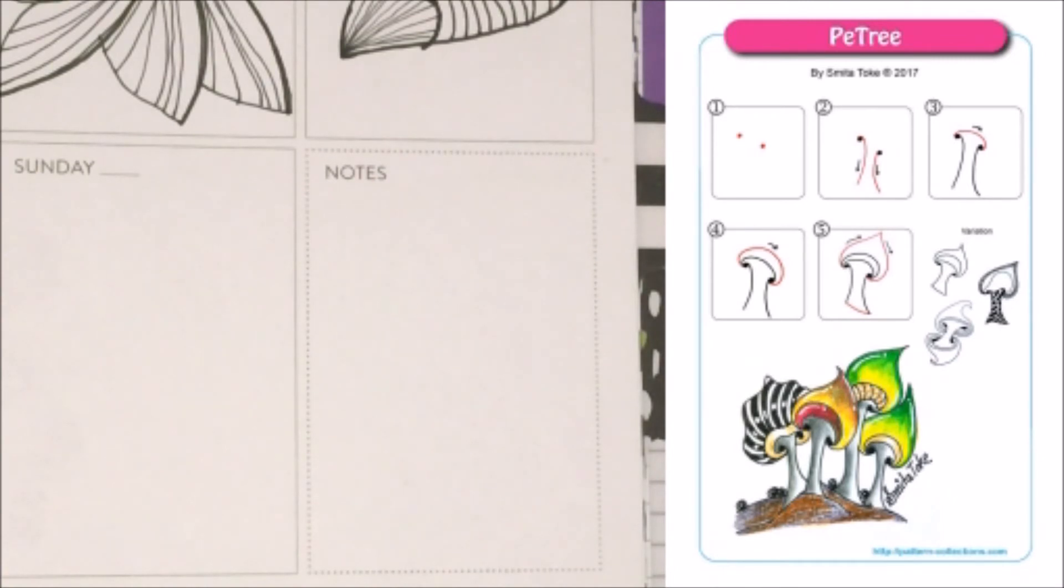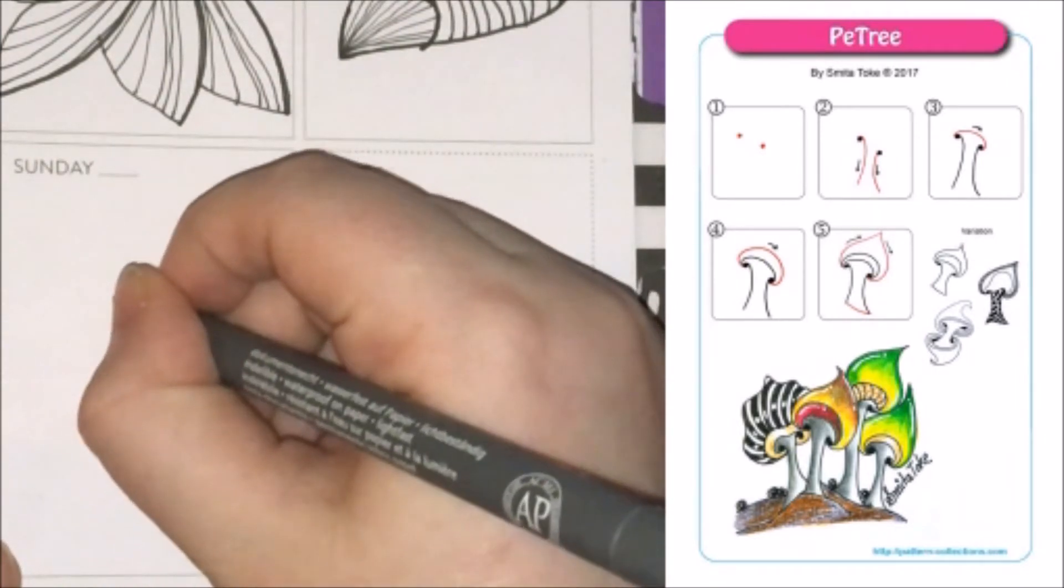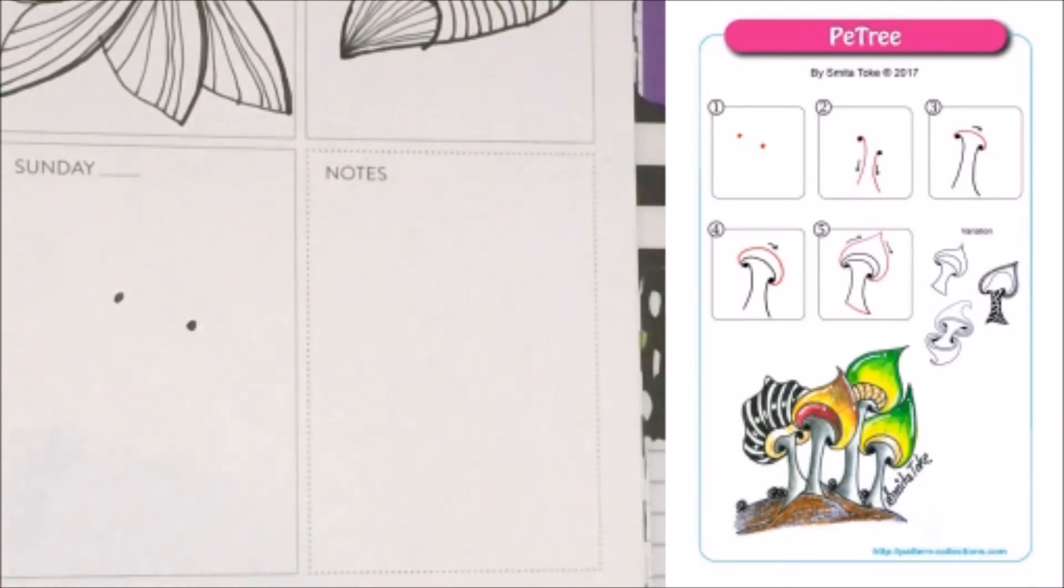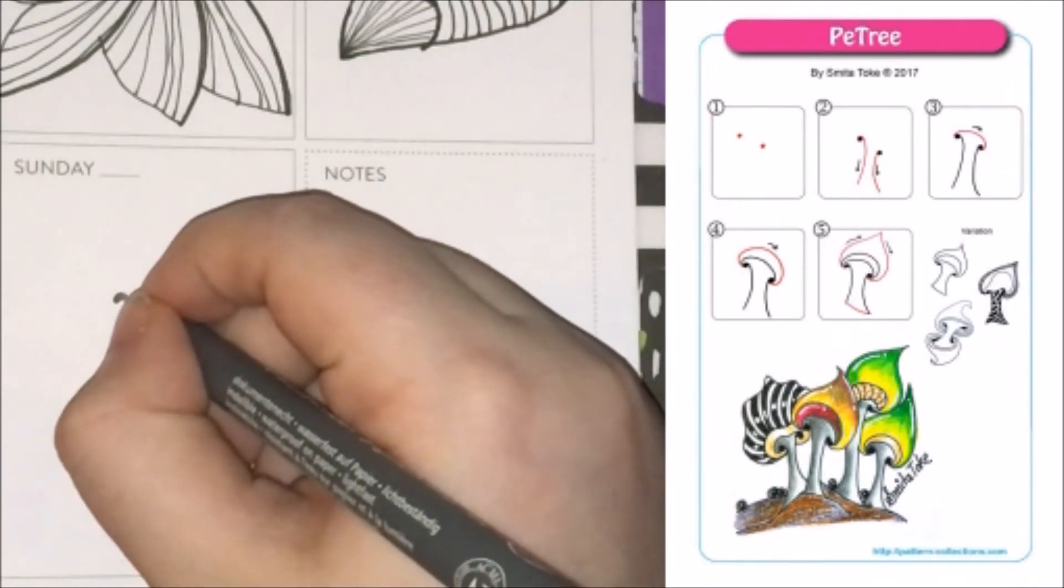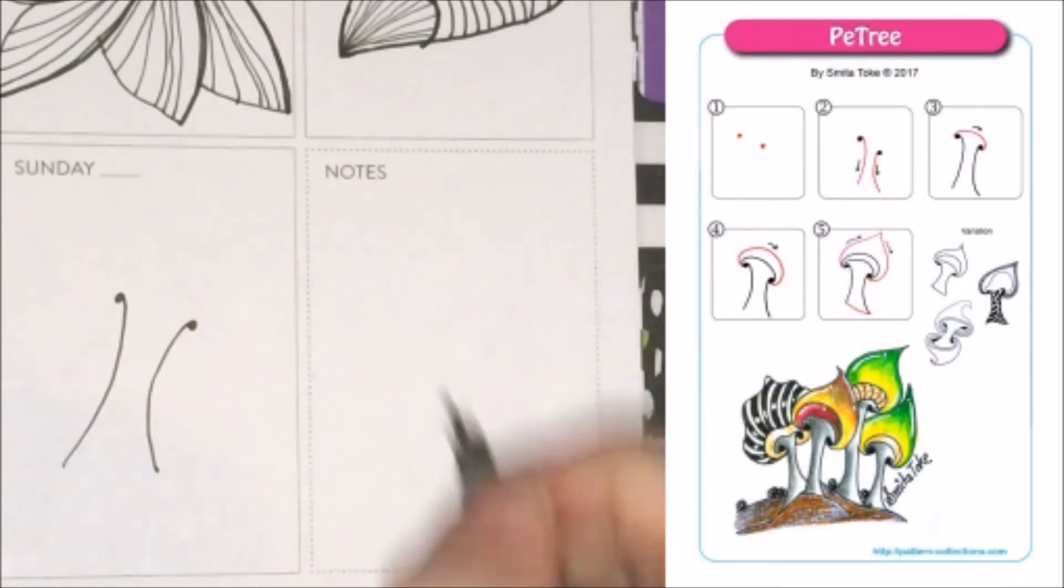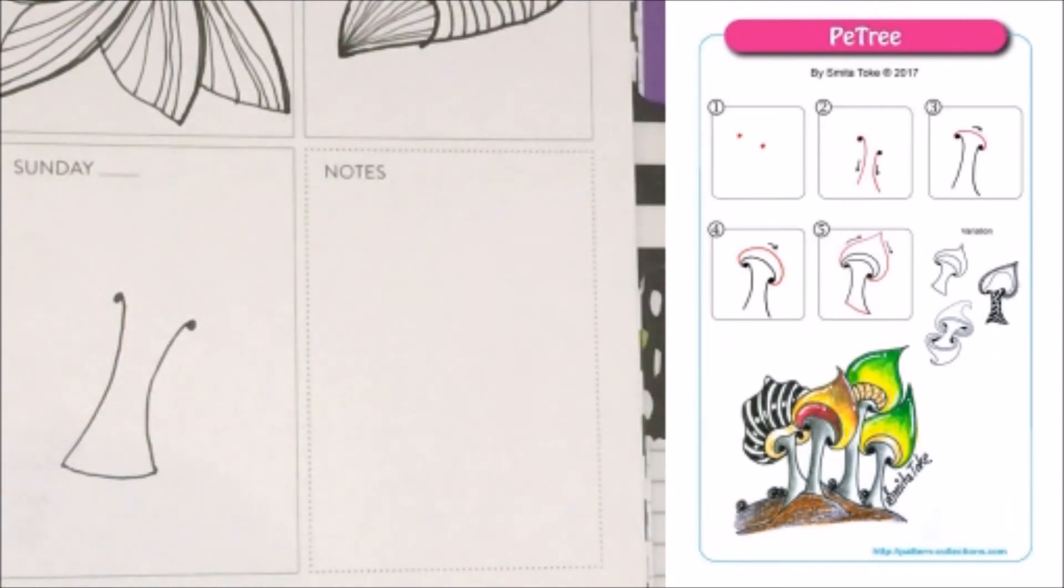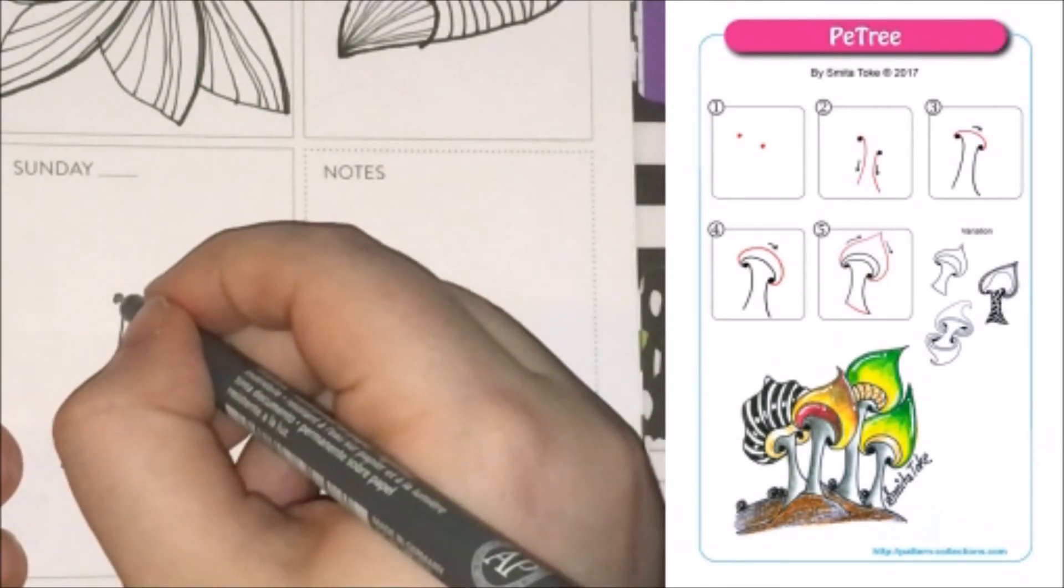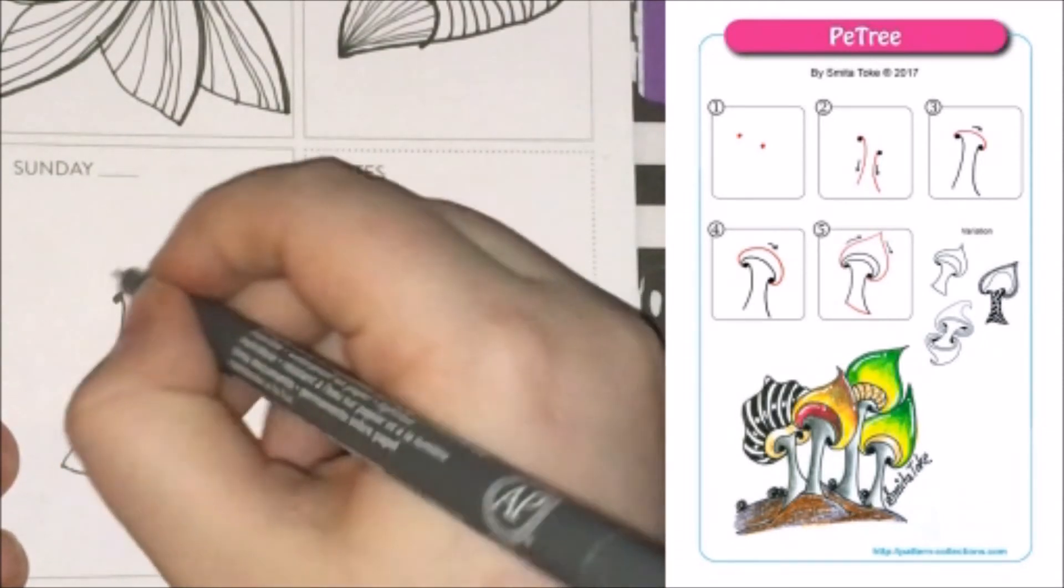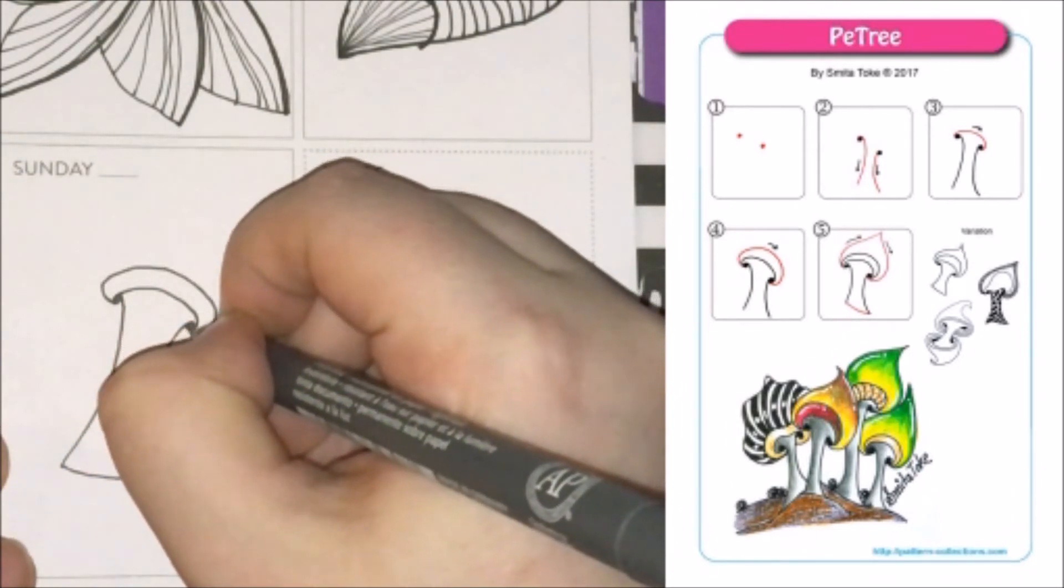The final tangle I have for you all today is called Patri, and it's by Smita Tok. And the way you're going to approach this one is you're going to start by making two dots. And then from those two dots, you're just going to do some curves that come downward in a bit of a parenthetical shape. And you can connect them on the bottom. And then we're also going to connect them on the top. We're going to echo the one on the top with a slightly larger circle, or semi-circle.